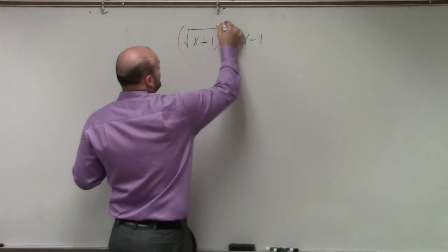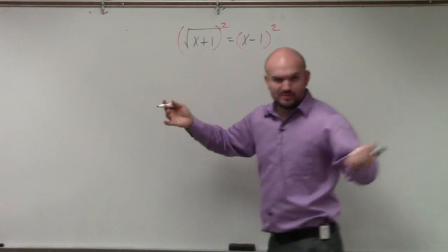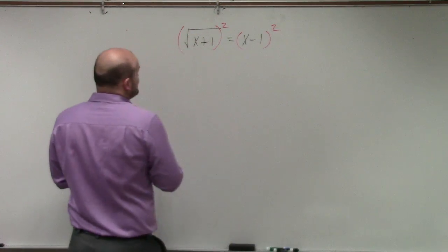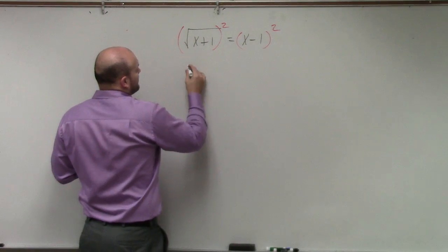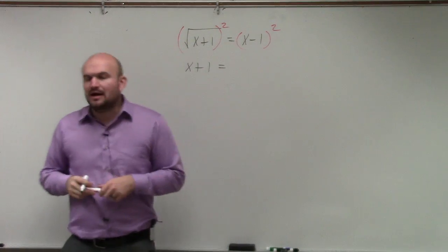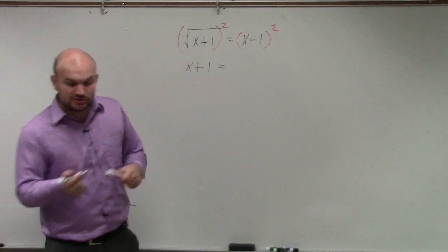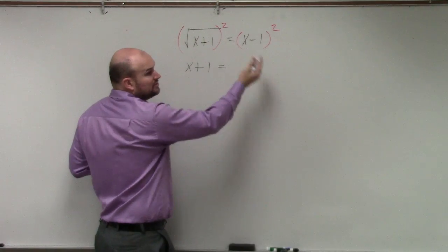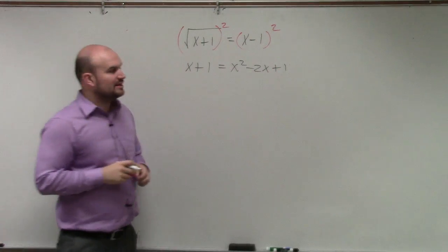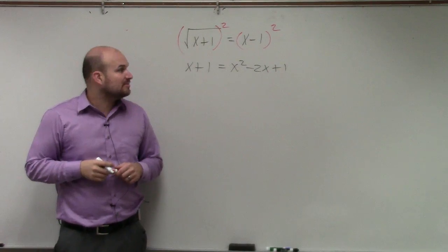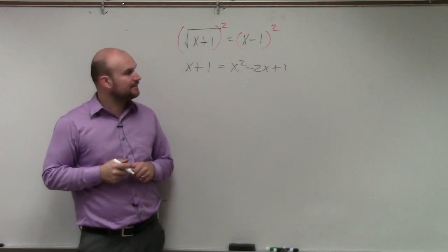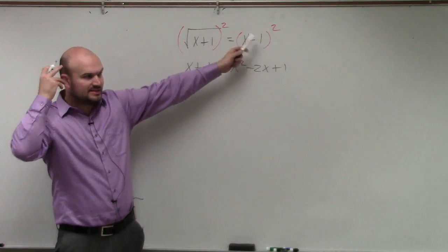So I'm going to get rid of the radical by squaring, because square roots are the same as raised to the 1/2, and you can raise to the 2. By doing that, I get x plus 1. Since we have already covered the multiplication of binomials, we should know that x minus 1 squared is a perfect square trinomial. You could use FOIL or the box method. Please remember, it's not x squared plus 1 — you do not distribute a power across addition or subtraction. You've got to use FOIL.